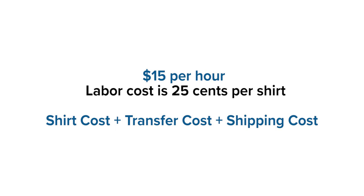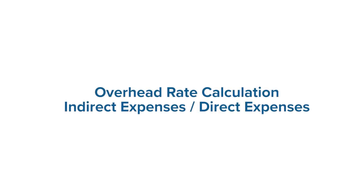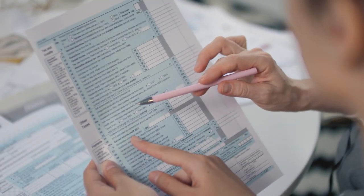To calculate your direct materials, all you need to do is add your shirt cost plus the transfer cost and the shipping. Then add your overhead. The overhead is the calculation of your indirect expenses and the direct expenses. These expenses could include accounting and legal expenses and administrative salaries.